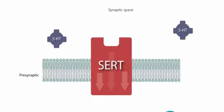The serotonin transporter, SERT, is a monoamine transporter protein. This is a membrane protein that transports serotonin from synaptic spaces into presynaptic neurons.